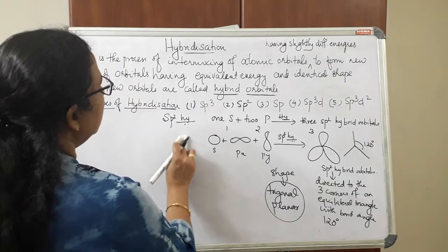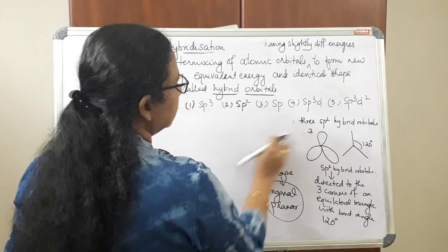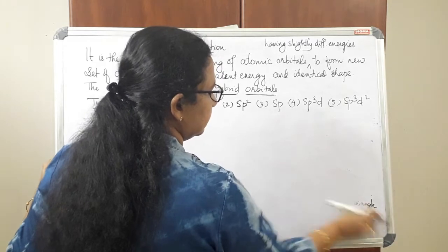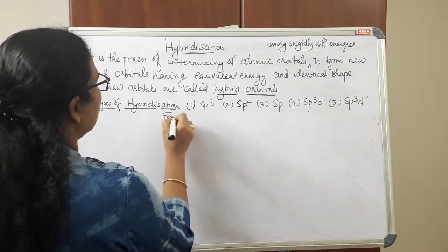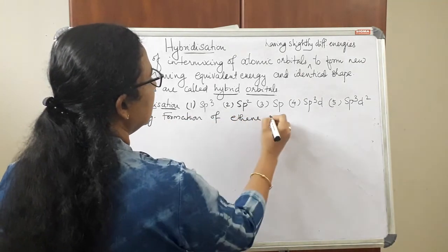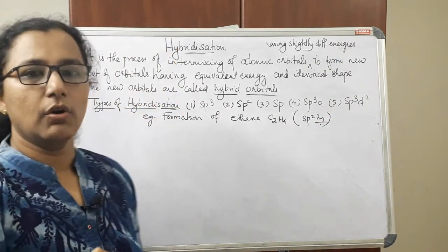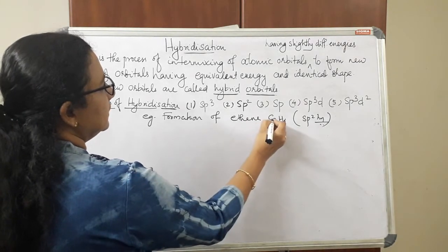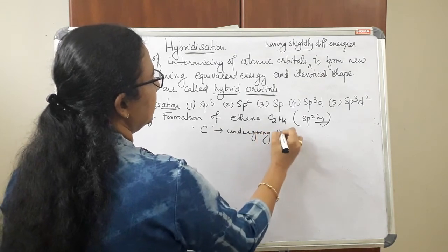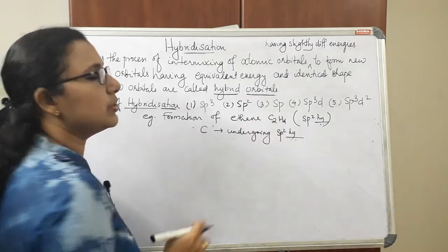Now let us see an example of a molecule with sp2 hybridization. We will consider the formation of the ethene molecule, C2H4. On the basis of sp2 hybridization we can explain the geometry of ethene. In this molecule, the carbon atom undergoes sp2 hybridization.